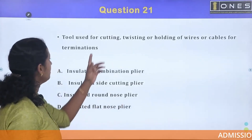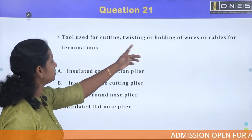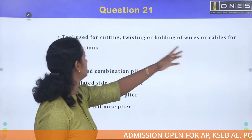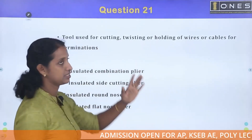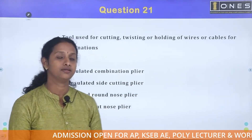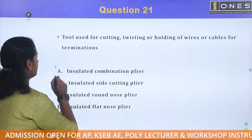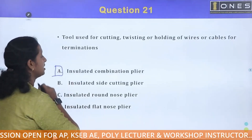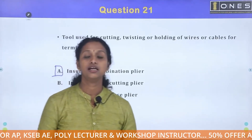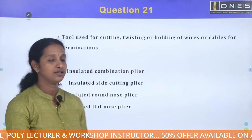As shown here — cutting, twisting, holding of wires or cables for termination. These side cutters are used for any type of work. That is the insulated combinational pliers.